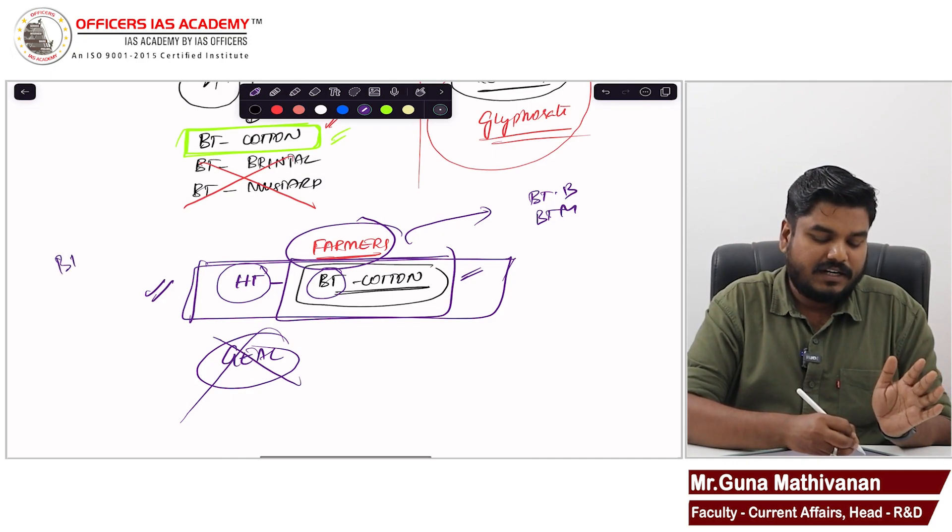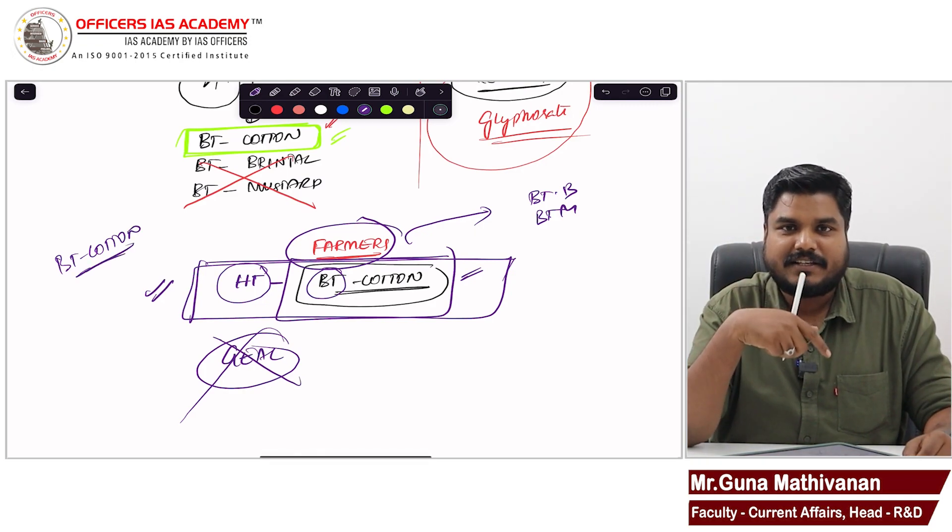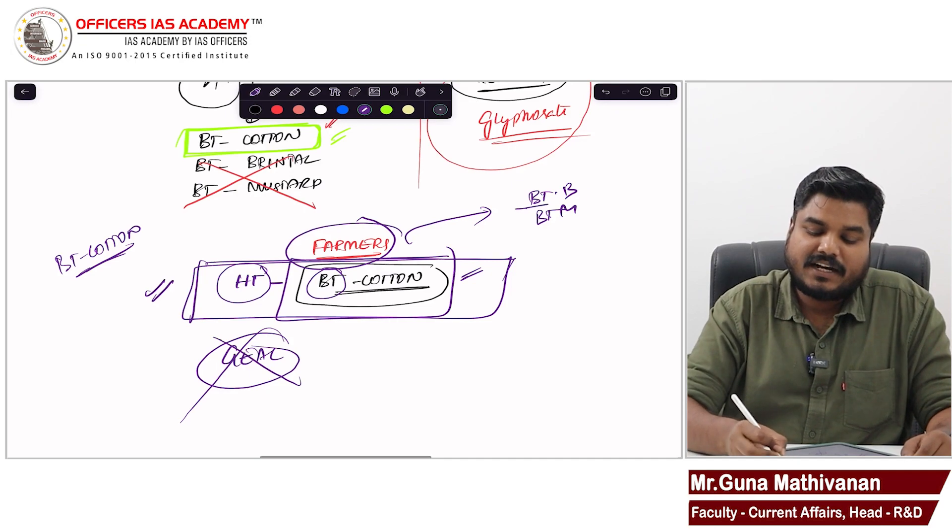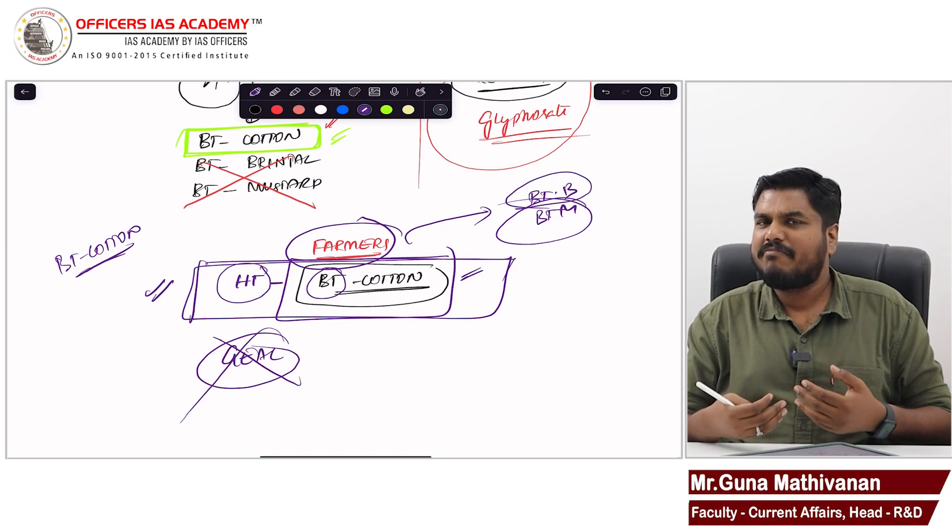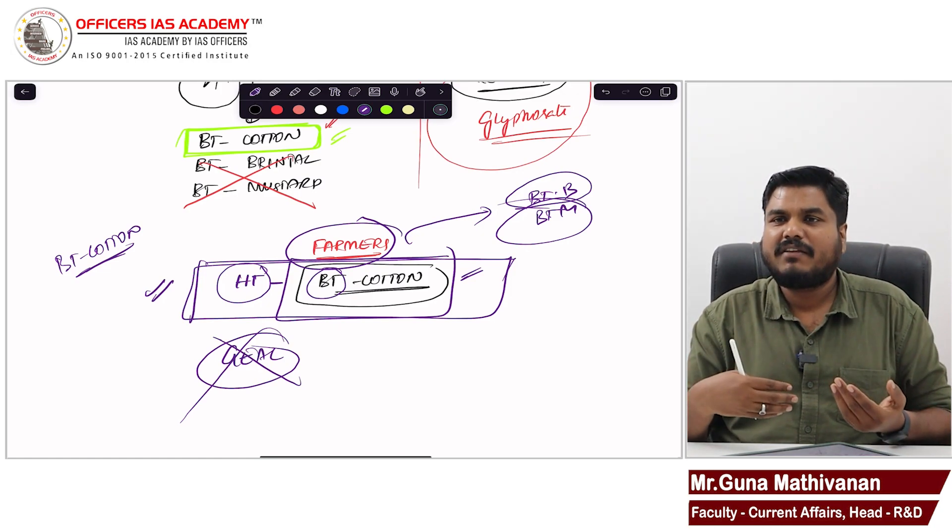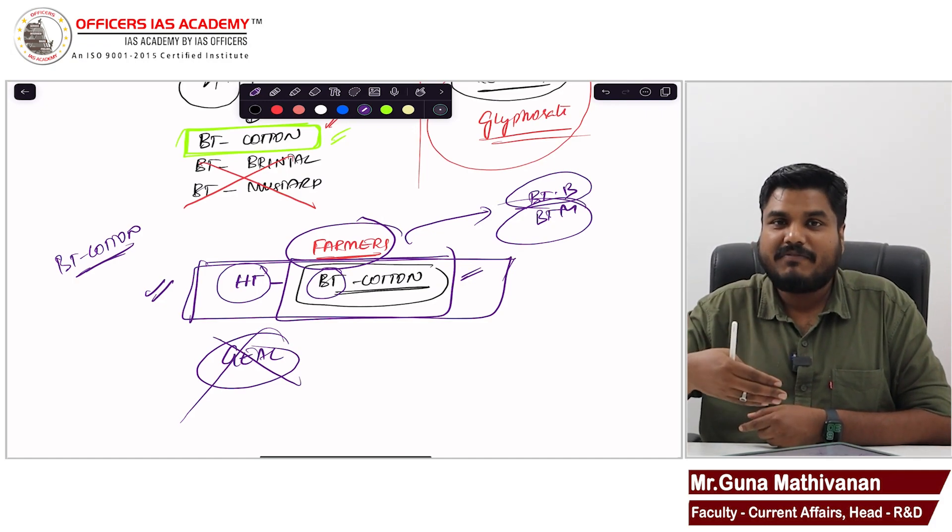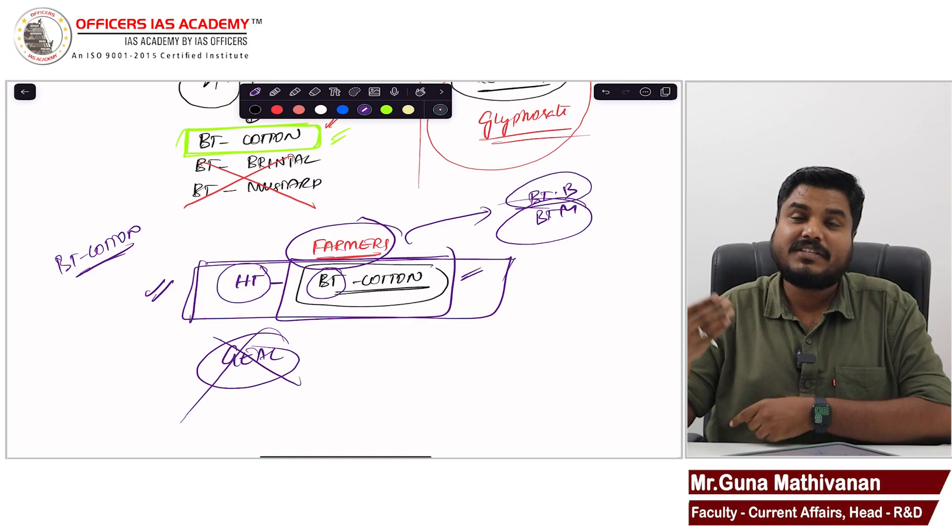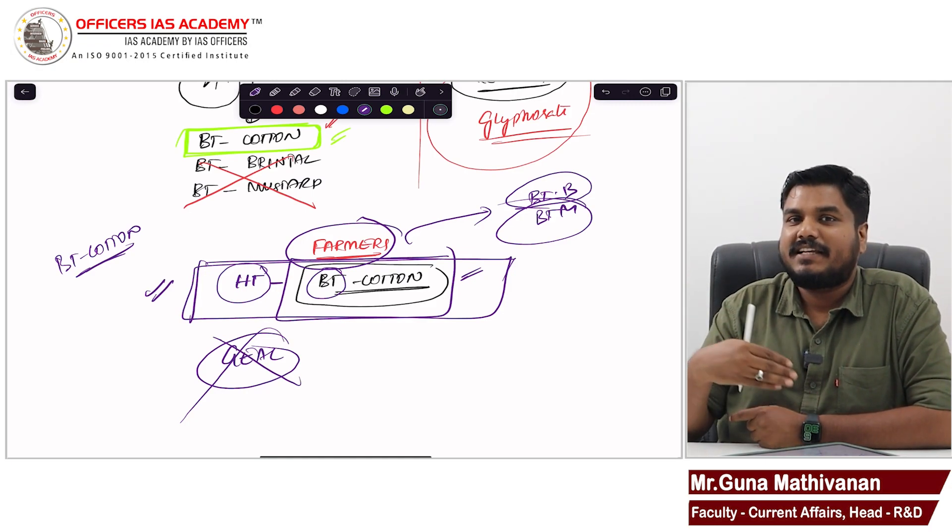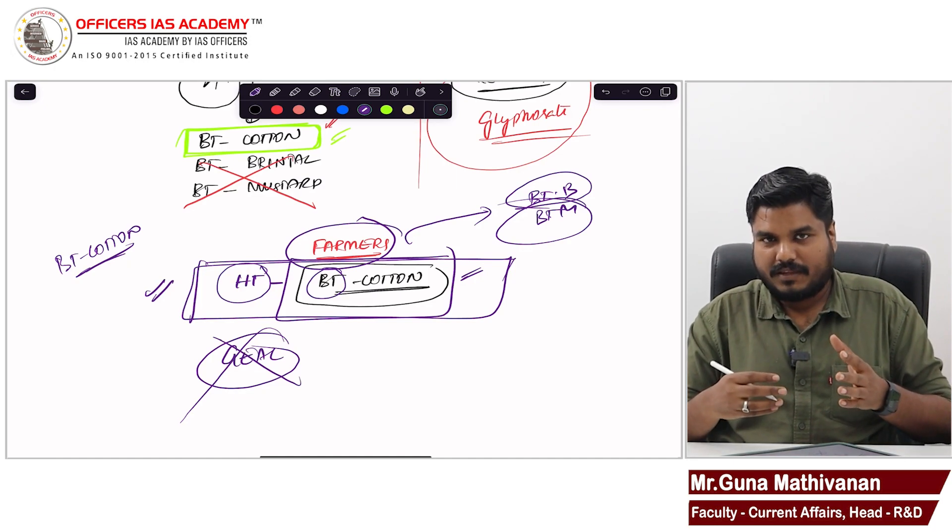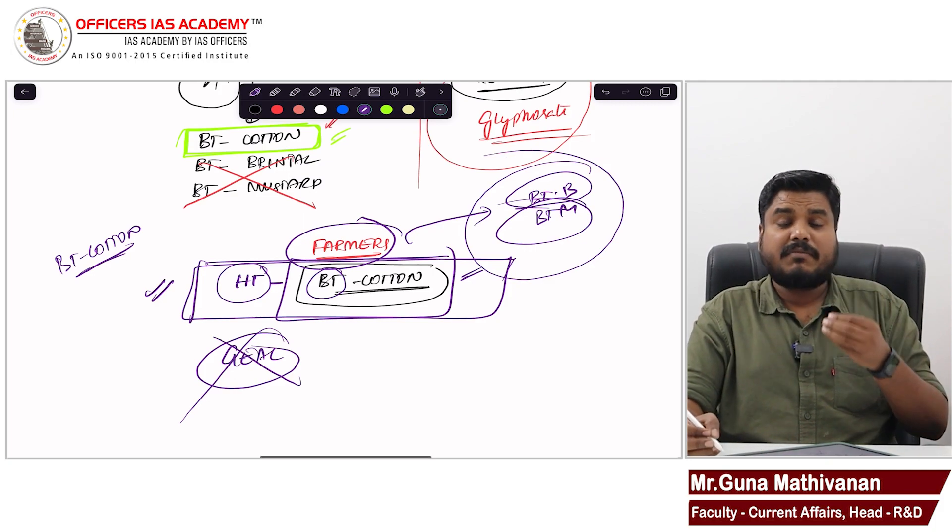See, this Bt cotton definitely saved the farmers from the insect attack. Similarly, many insects attack brinjal, mustard. So farmers definitely have that impression. When we grow Bt cotton, we are protected from the insects. So when we grow Bt brinjal, when we grow Bt mustard, when we grow genetically modified crops, it will prevent the pest attack. So farmers might find more utility in growing these genetically modified crops.